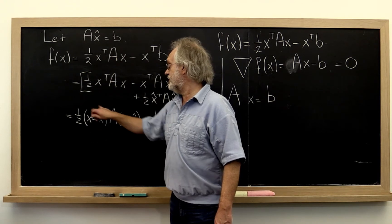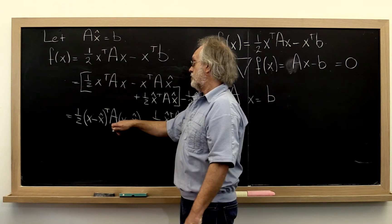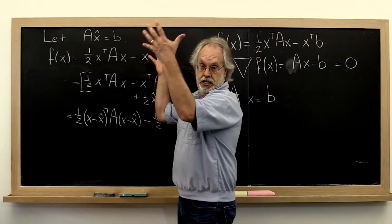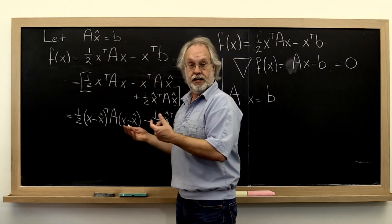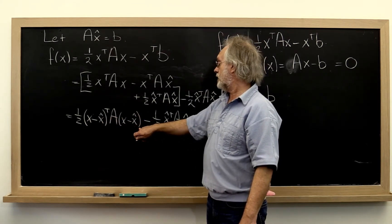Why? Because if this is a non-zero vector, then we know that that vector transpose times a times the vector is positive because of the fact that a is positive definite. So therefore this term is minimized when x is equal to x-hat.